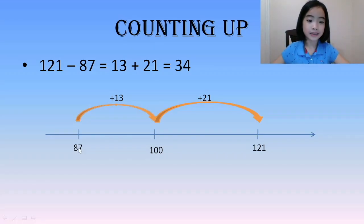From 87 to 100 is 13. And from 100 to 121 is 21. So, 121 minus 87 equals 13 plus 21, which is equivalent to 34.